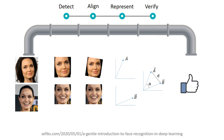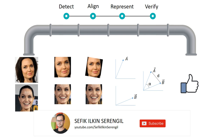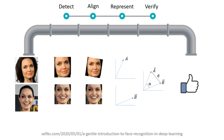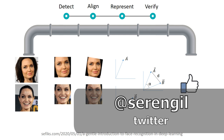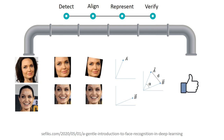Hello. In a face recognition pipeline, convolutional neural networks are responsible for representing face images as vectors. If we feed two face images to a CNN, we will have two multidimensional vectors. We will then find the distance between these vectors. Finally, we will classify image pairs as the same person if the distance is less than a custom threshold value. In this video, we will mention how to determine the threshold value in a modern face recognition pipeline.